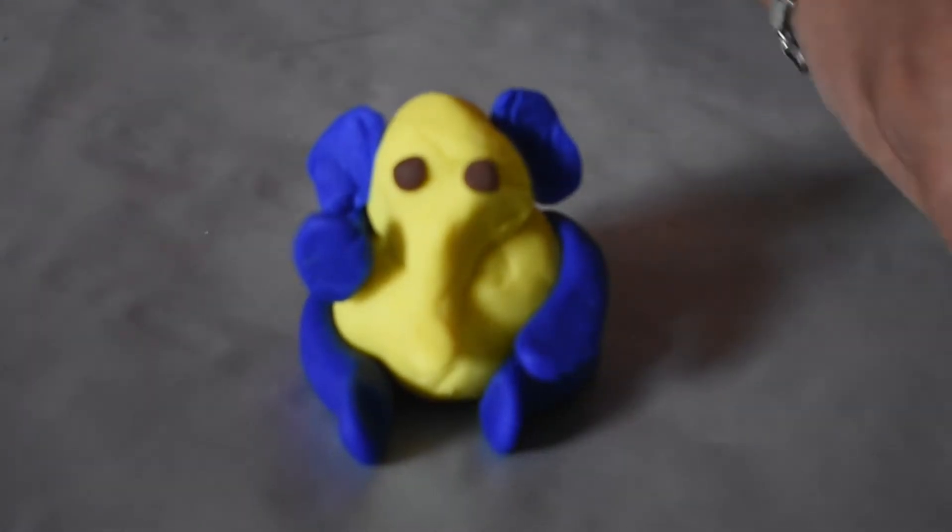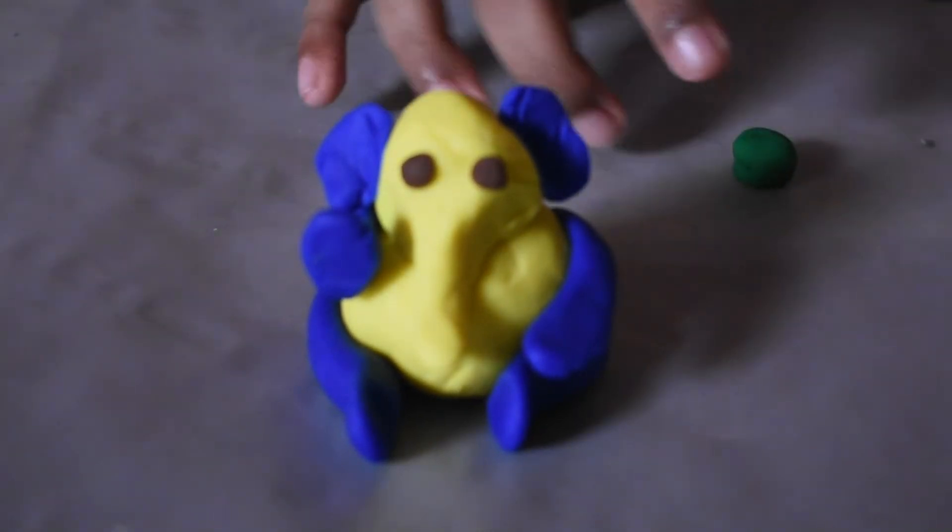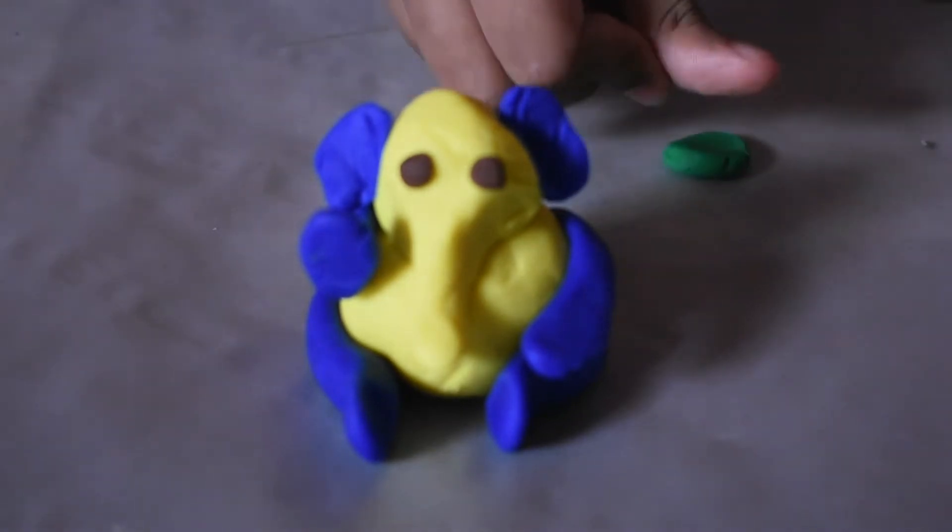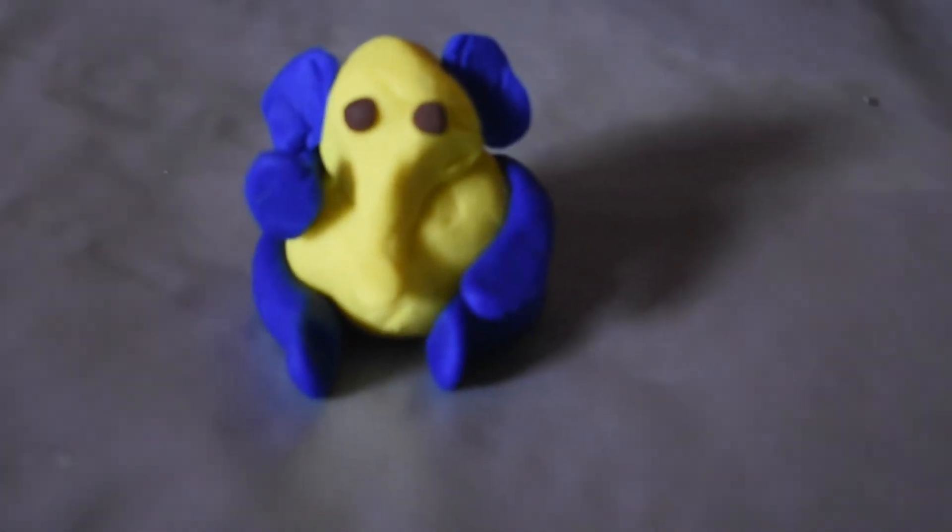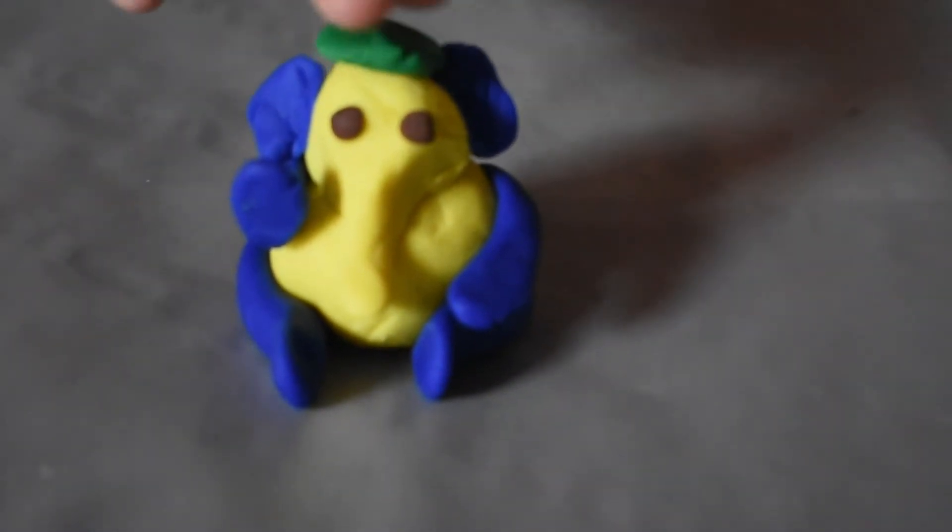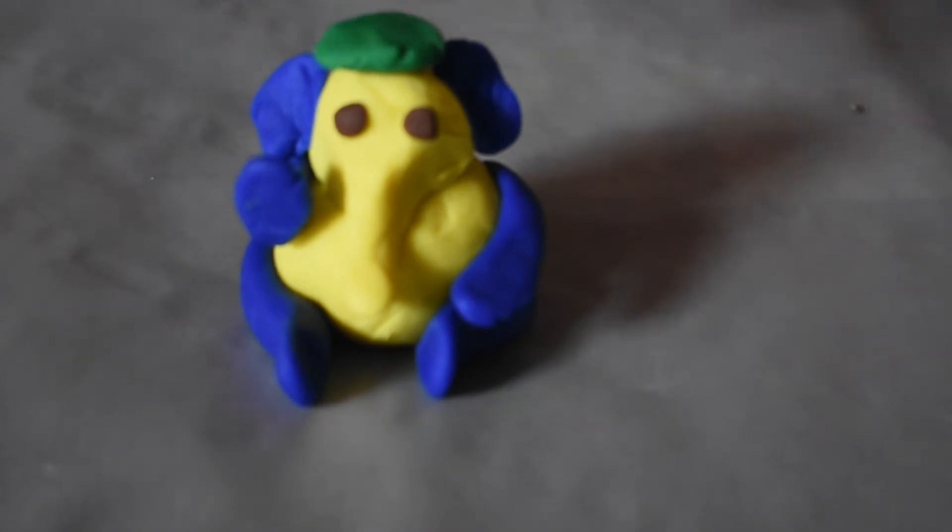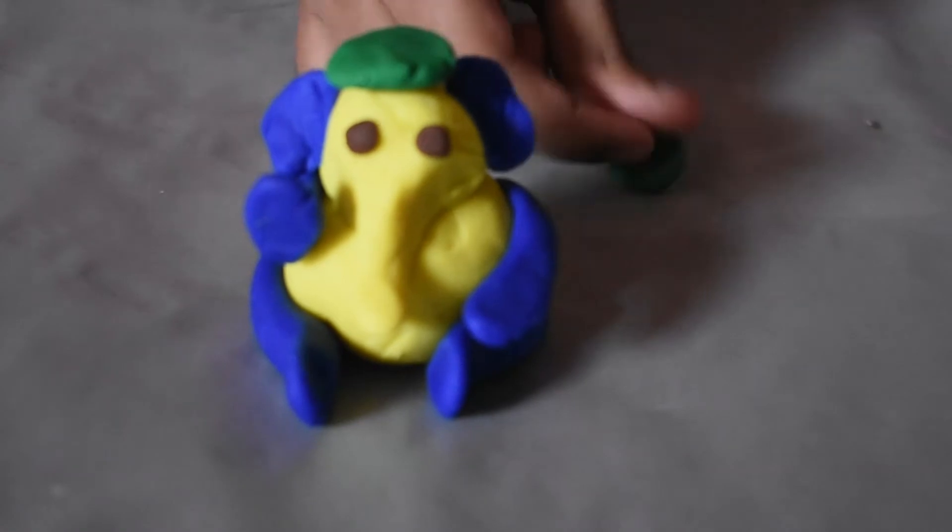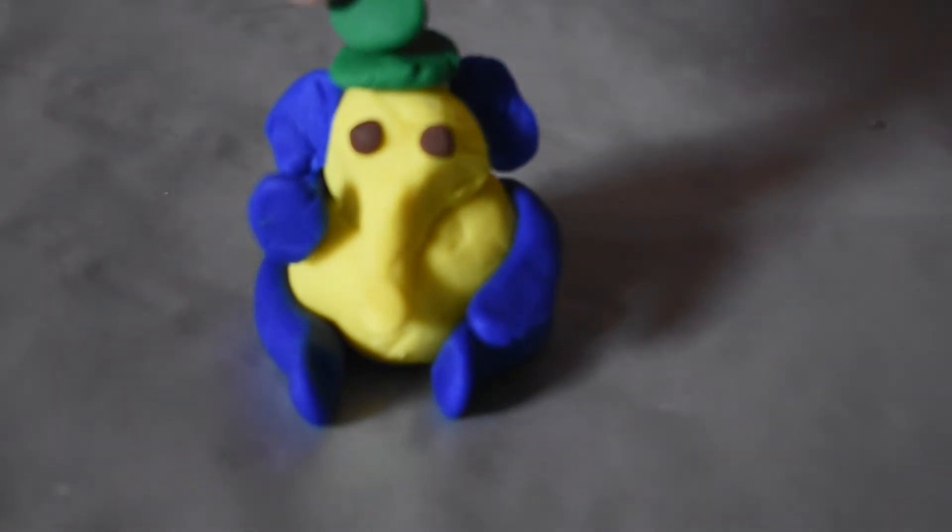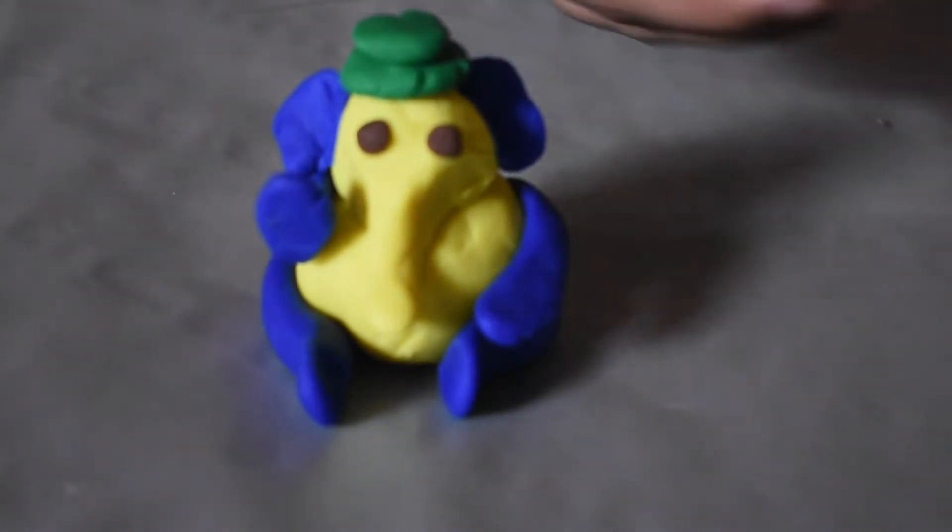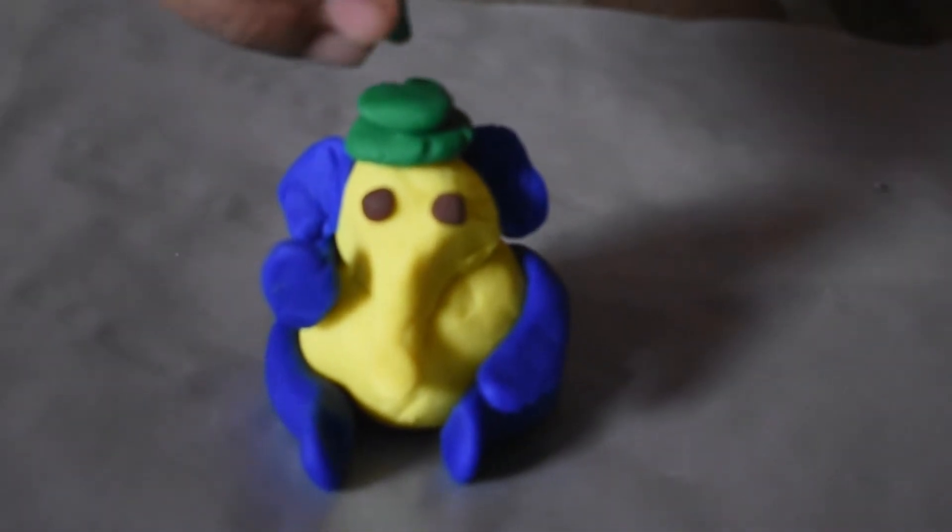I am making the crown. You have to take a small ball and press it with your thumb like this. Now place it on the head of the Ganesha. One more ball you can stick like that. At last you can stick an oval shaped ball for the crown.